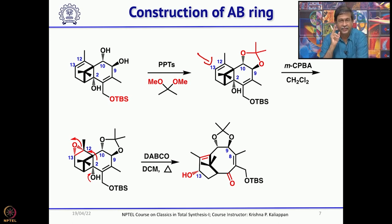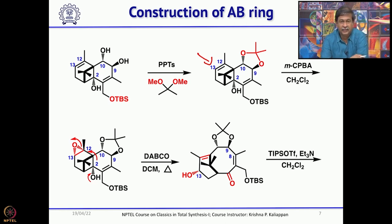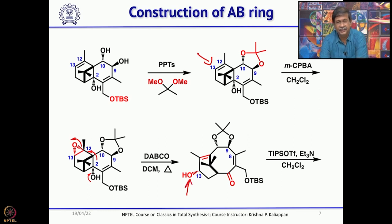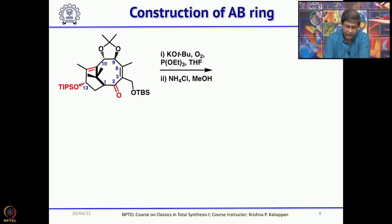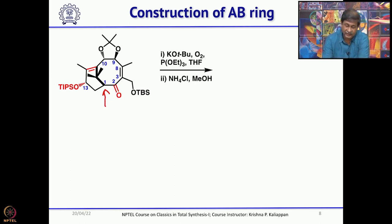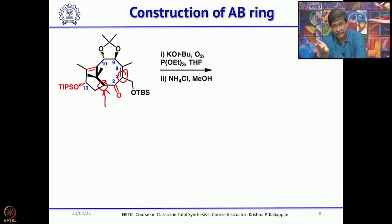Now what one has to do is construct the C ring, followed by construction of the D ring — the oxetane — then attach the side chain with some minor functional group modifications beforehand. The secondary allylic alcohol formed was protected as a TIPS ether by treating with TIPS triflate in dichloromethane. Once you have that, you need to introduce a hydroxyl group at the bridgehead position. This is the best time because you can generate the enolate here; once you reduce the double bond, the enolate can be generated at that position. It was done by treating with potassium tert-butoxide and oxygen, and the resultant hydroperoxide was converted into a hydroxyl group by treatment with triethyl phosphite.